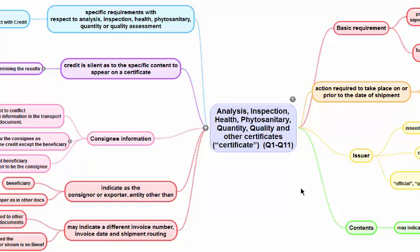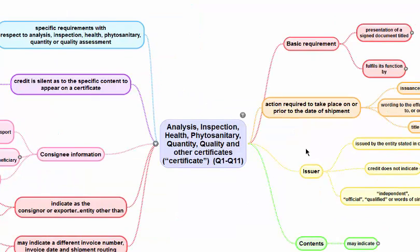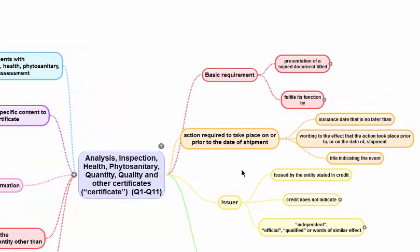When the credit calls for a certificate, it could be an analysis certificate, an inspection certificate, a phytosanitary certificate, a quantity certificate, a quality certificate, or any other certificate. When it just calls for a certificate, we will be using this particular article to help us understand how to handle the examination of documents.